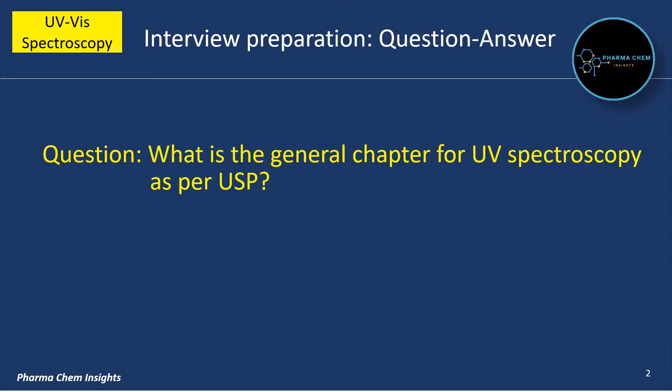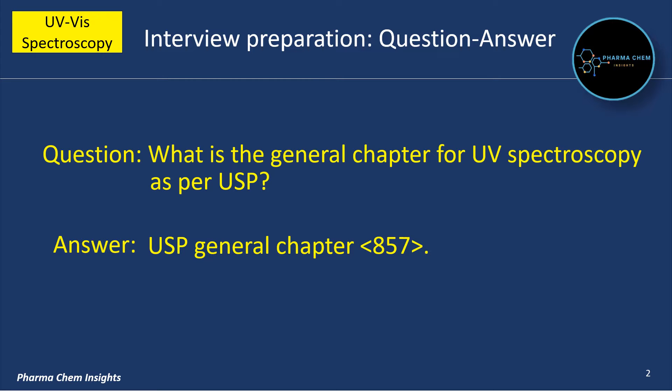First question is: what is the general chapter for UV spectroscopy as per USP? The answer is USP General Chapter 857.